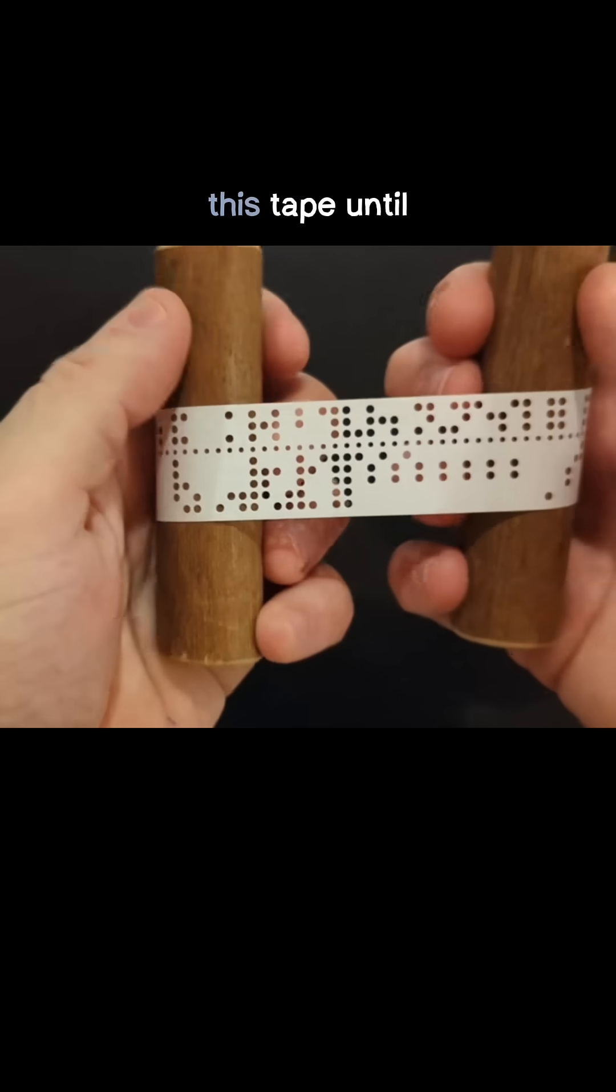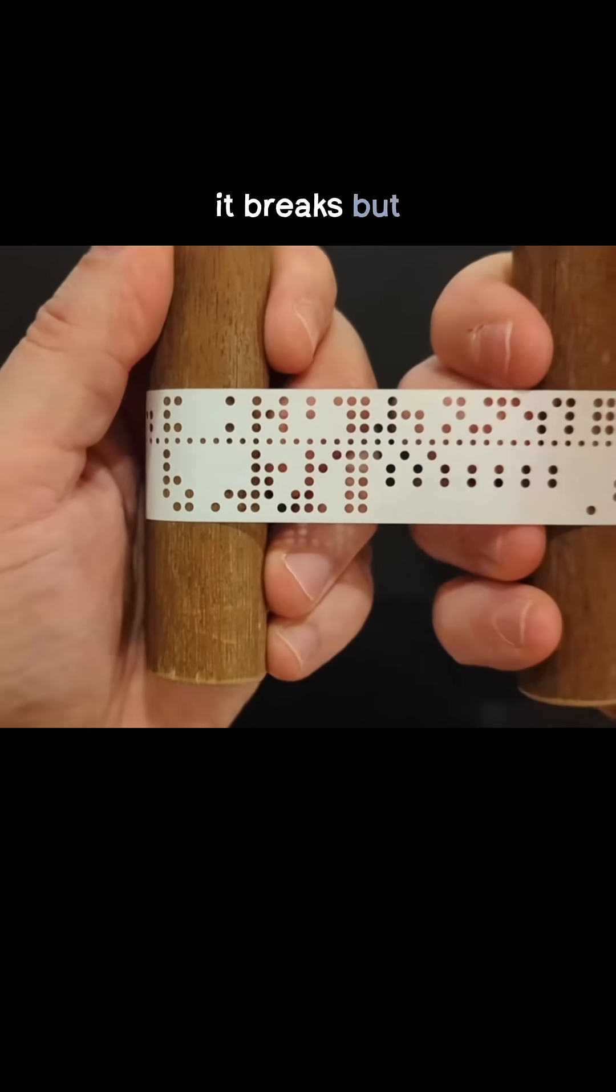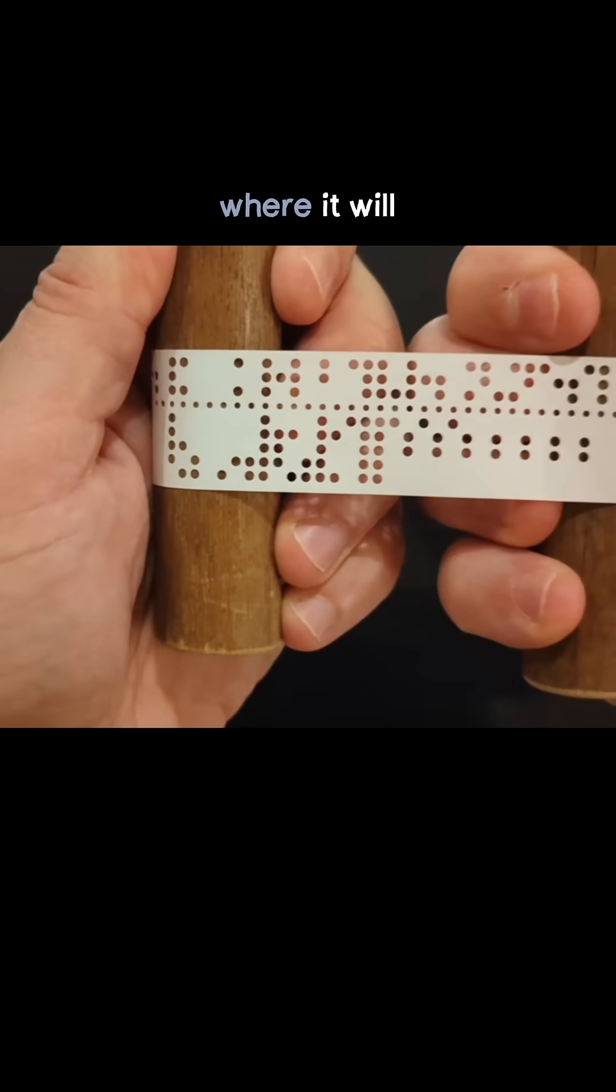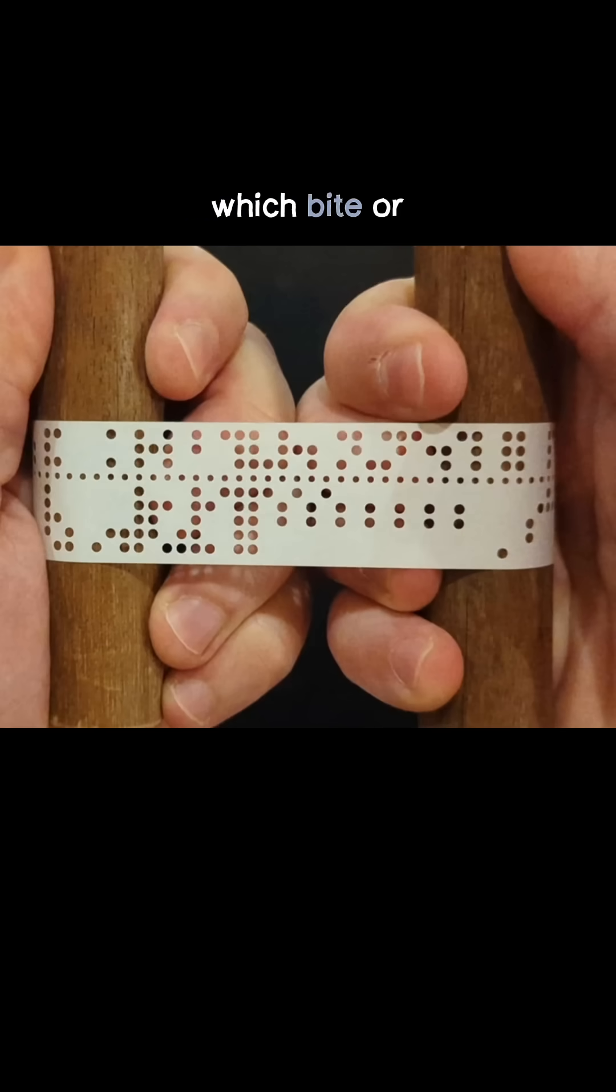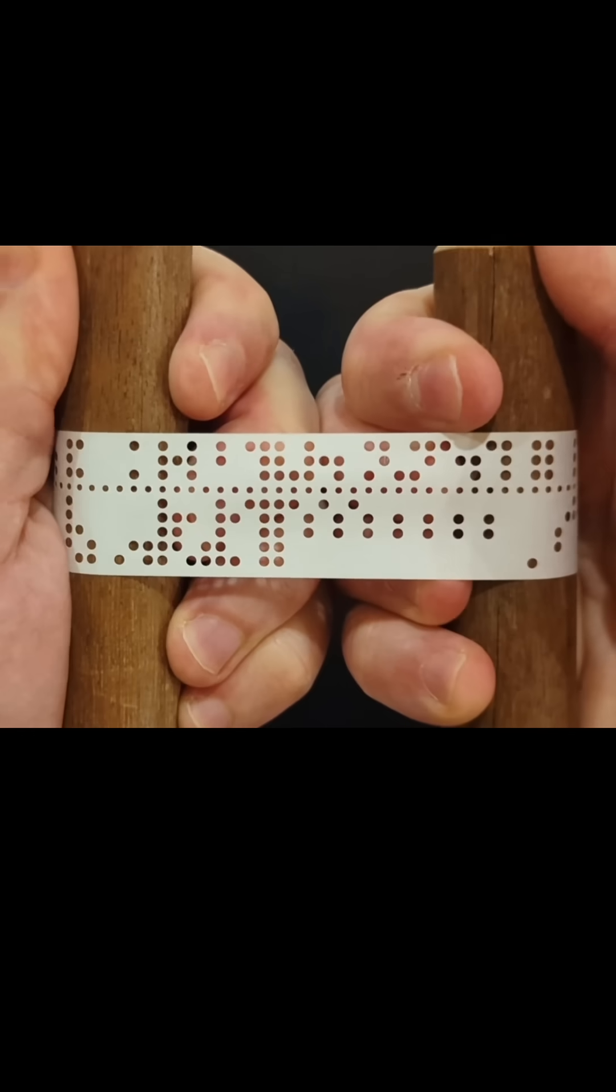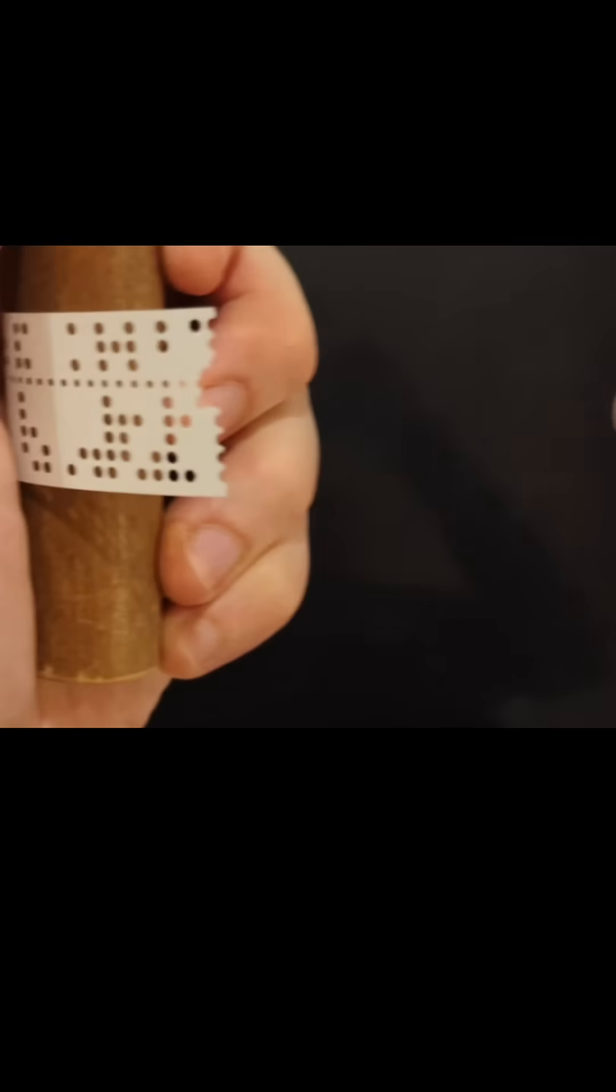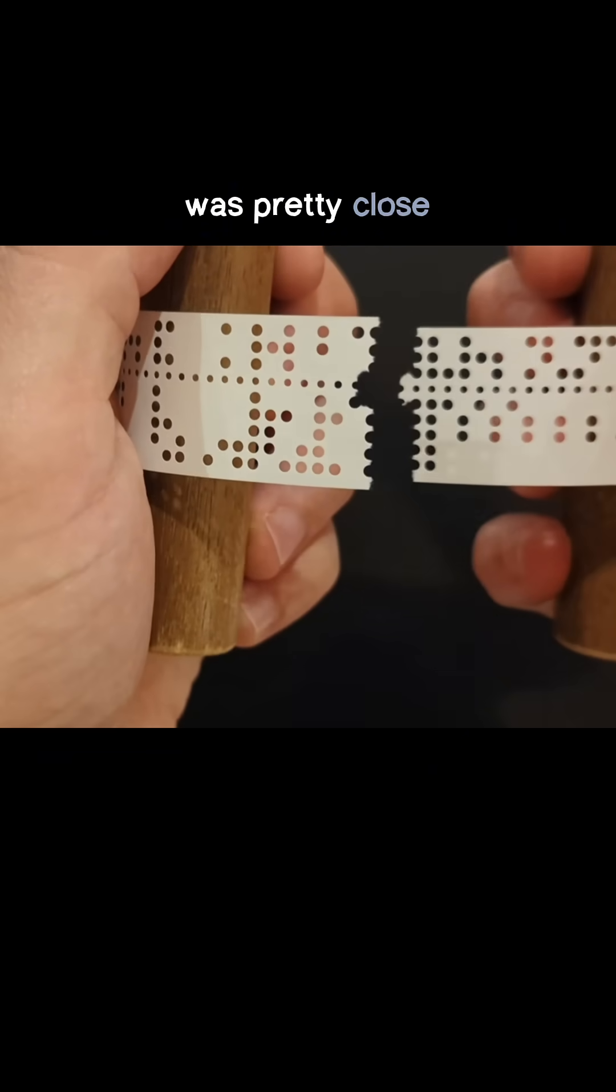Here, I'm going to pull on this tape until it breaks, but before I do, can you guess where it will break? Which byte or bytes of encoded information do you think make the weakest links? I'm going to guess this one right here, but let's find out. I was slightly off, but I was pretty close.